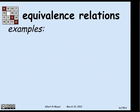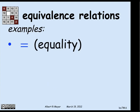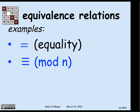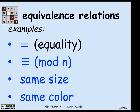Some examples of equivalence relations illustrate why they're so basic. The most fundamental one is equality — obviously, equality is symmetric, reflexive, and transitive, so it's an equivalence relation. Another one is congruence mod n, which is also symmetric, transitive, and reflexive. Two finite sets being the same size is another example. Finally, two objects having the same color is a relation among objects that is symmetric, transitive, and reflexive — so it's an equivalence relation.